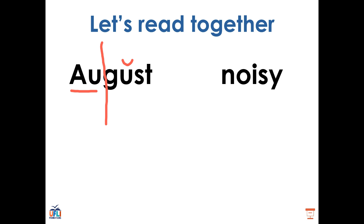And we have this word. Again, I see a diphthong in there — the OI. And it is a two-syllable word. That Y at the end is going to say E. So if I sound it out, I have NOISY. NOISY. Well done.